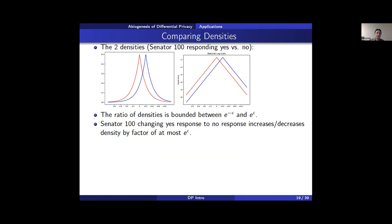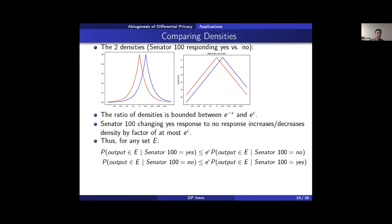Plotting the two densities together and switching to a log scale on the y-axis shows that the ratio of densities is always bounded — it's between e to the minus epsilon and e to the epsilon. This means that if Senator 100 submitted no instead of yes or vice versa, the only effect is that the probability density increases or decreases by a factor of at most e to the epsilon, and therefore the probability of any output event changes by at most e to the epsilon.